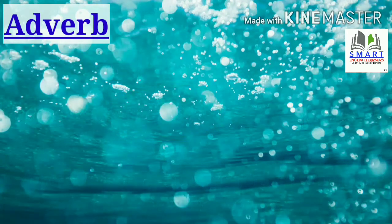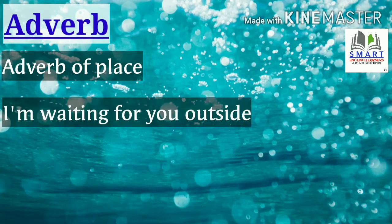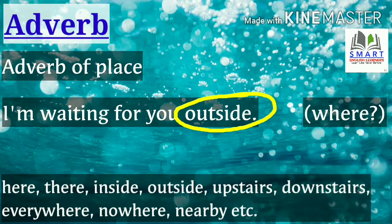Sometimes adverbs tell us the place where something happens — these are adverbs of place. For example, 'I am waiting for you outside.' Where am I waiting? Outside. Hence, outside is an adverb of place. These adverbs answer the question where. Other examples: here, there, inside, outside, upstairs, downstairs, everywhere, nowhere, nearby, etc.